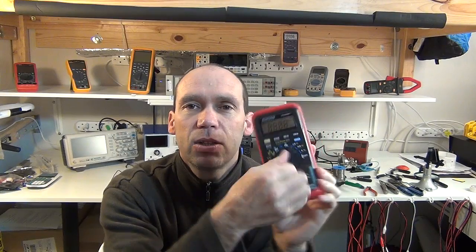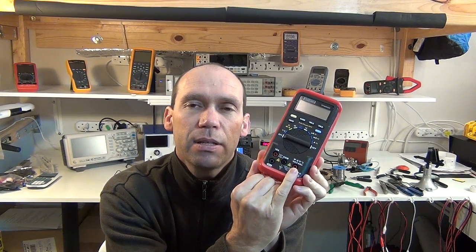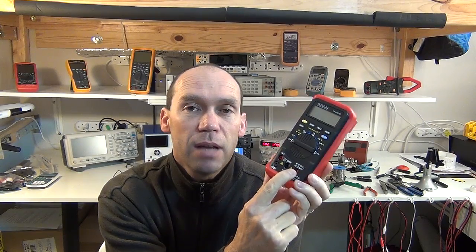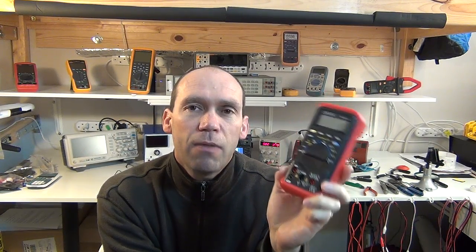One valid comment someone did make about the selector switch having an off on either side is that the current input, you can measure milliamps and microamps at the same input as the voltage. So if you slide the slider right across you risk causing a short. I'll show you that when we've got it on the bench and then after I've showed you this software we'll have a look at the battery consumption to see how long potentially the batteries would last if you are going to leave it to do some data logging.